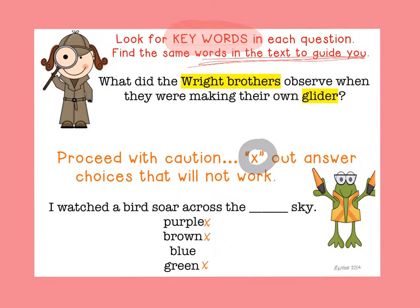When you're given multiple choice questions, often there are some answers that are just ridiculous. You can say, I'm going to cross out ones that just don't seem to fit. That helps you narrow down a choice for a particularly tough or difficult question.